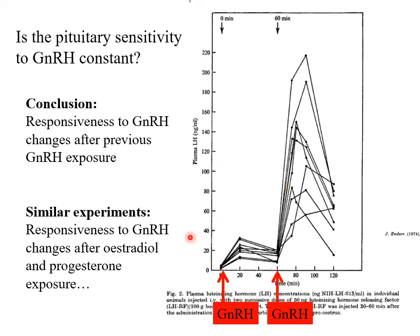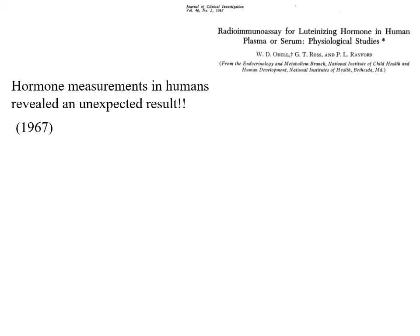Similar types of experiments showed that pituitary responsiveness to GnRH was also changed by previous exposure to estradiol and progesterone in various doses. So pituitary sensitivity was not constant — it was variable depending on the endocrine environment, depending on the GnRH coming down and the frequency of that, and the steroid environment. This was in the era of developing radioimmunoassays, the first time people had been able to measure hormones in the blood with good accuracy, and hormone measurements in humans of LH produced very unexpected results.